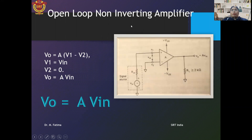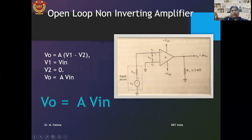This is the circuit diagram of the open-loop non-inverting amplifier. The input voltage is connected to the positive terminal of the op-amp and the negative terminal is grounded. The voltage at the negative terminal is taken as V2 and the voltage at the positive terminal is taken as V1. The output is taken from here.